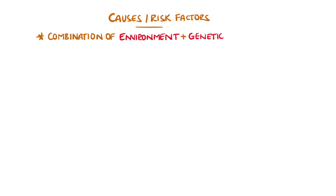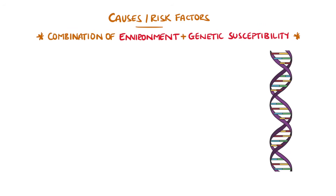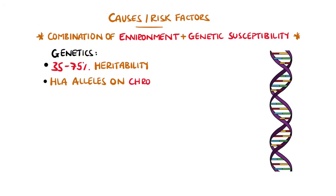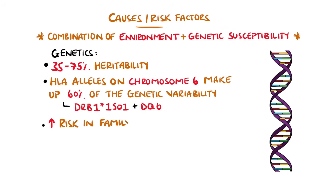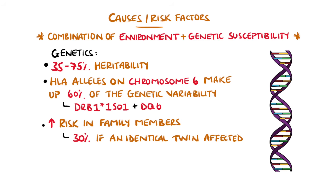The exact cause is not known, but it is thought to be a combination of environmental triggers and genetic susceptibility, with between 35 and 75% heritability. Up to 60% of the genetic variation is believed to come from differences in human leukocyte antigen (HLA) alleles on chromosome 6, which have been linked to autoimmune conditions like type 1 diabetes and lupus. Some alleles in particular are more associated. If an identical twin has MS, the other will also develop it in 30% of cases; if an individual has an affected sibling or parent, their chances are between 2 and 2.5%.